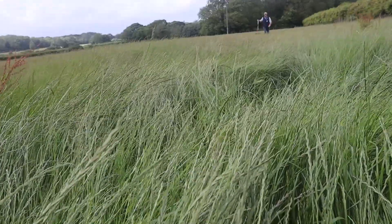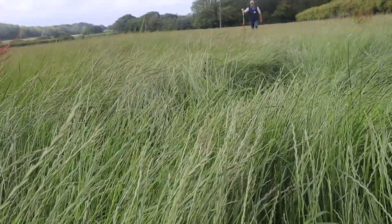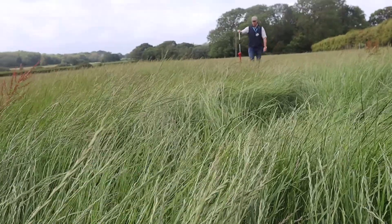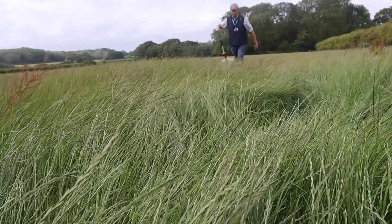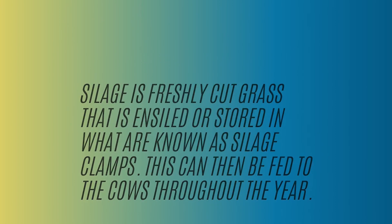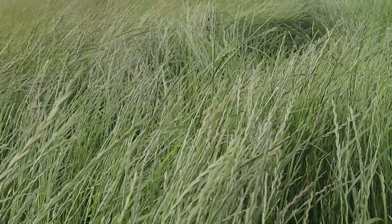To be able to manage the cows' need for food, it is important to understand the amount of potential grass that can be cut to make silage. Silage is freshly cut grass that is ensiled or stored in what is known as silage clamps, which can be fed to the cows throughout the year.